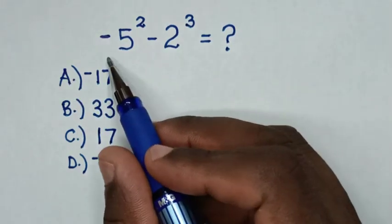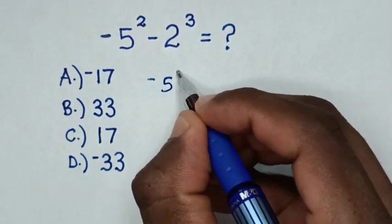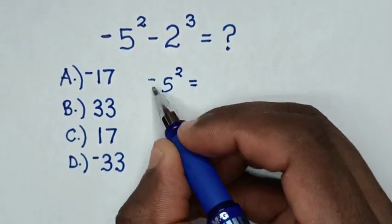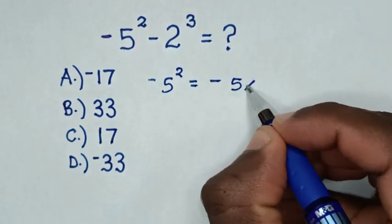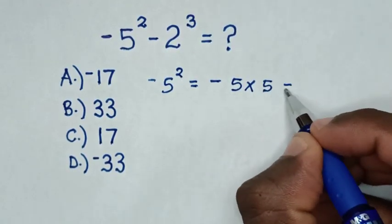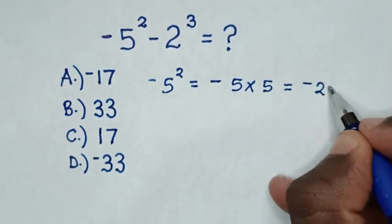From here, negative 5 square is equal to negative, then 5 square is 5 times 5, then it will be equal to negative 25.